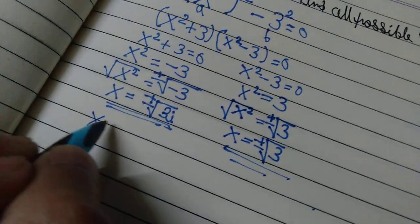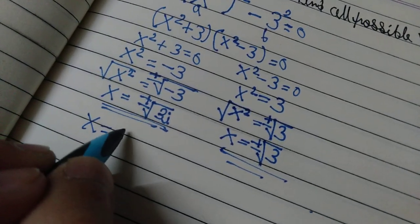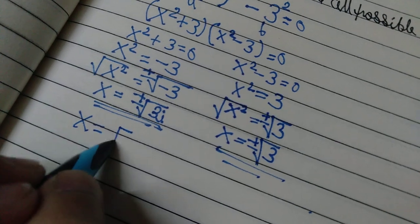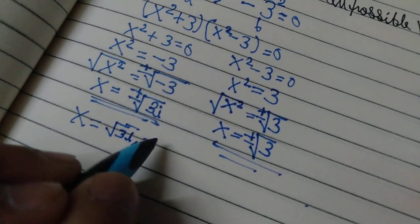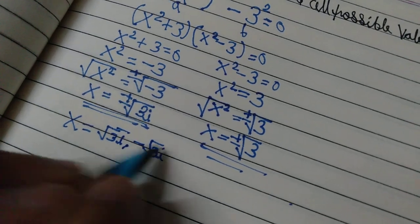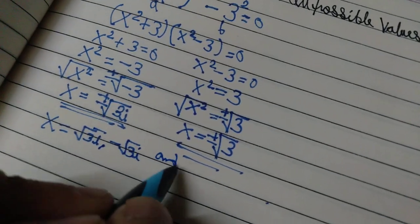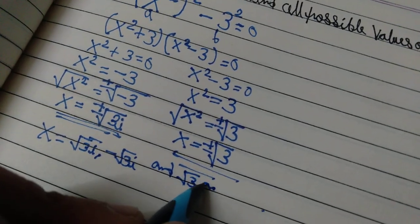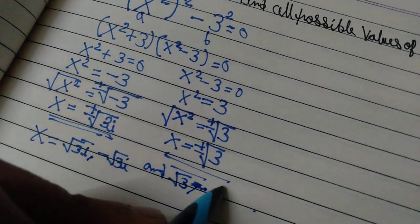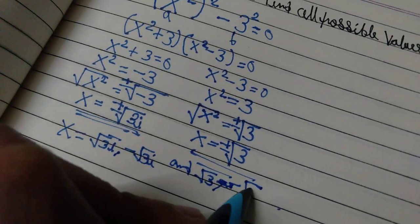as follows: x equals root 3 i, negative root 3 i, root 3, and negative root 3.